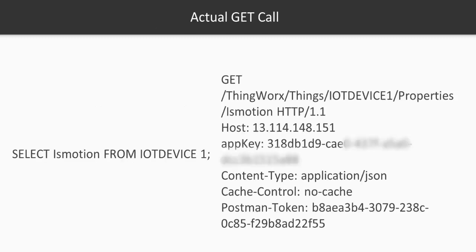Just to give you an idea: on the left hand side you have a general SELECT query — we're gonna try to select is_motion as a column from the table iot_device_one. On the right hand side is the actual GET request we're going to build. We use the verb GET, which is when you want to get the value from the server or target. You build the URL with HTTP/1.1, give the host name (your domain name which translates to an IP), then provide the app key, set content type to application/json, and cache-control to no-cache.